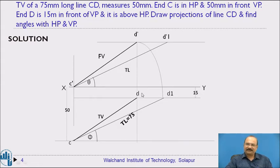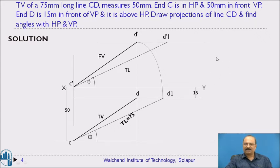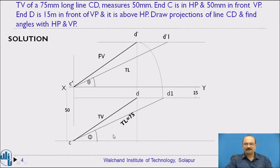Even if you extend the line, the angle remains the same because the lines are parallel. Measure angle alpha as the apparent angle made by the line with the XY line, which you can also describe as the angle with the horizontal plane. Similarly, measure angle beta — this is not phi, but the apparent angle made by the top view line with the XY line, which relates to VP.